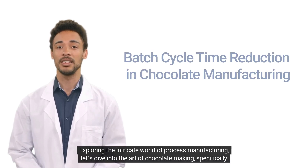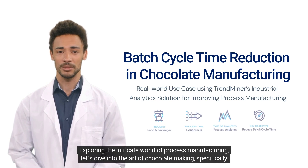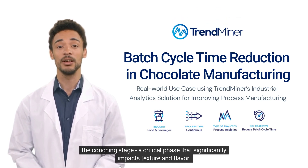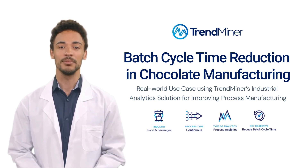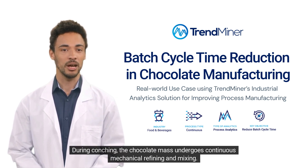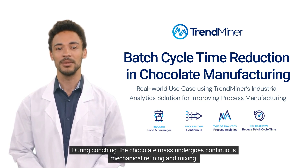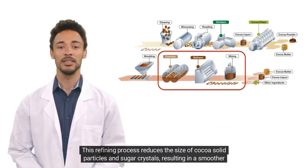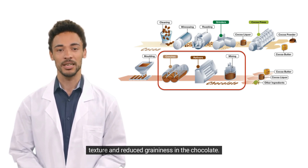Exploring the intricate world of process manufacturing, let's dive into the art of chocolate making — specifically the conching stage, a critical phase that significantly impacts texture and flavor. During conching, the chocolate mass undergoes continuous mechanical refining and mixing. This refining process reduces the size of cocoa solid particles and sugar crystals, resulting in a smoother texture and reduced graininess.